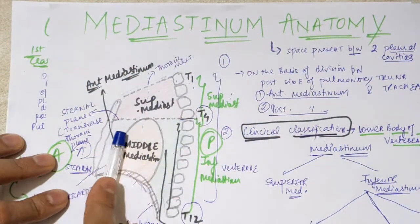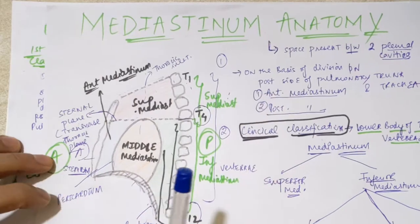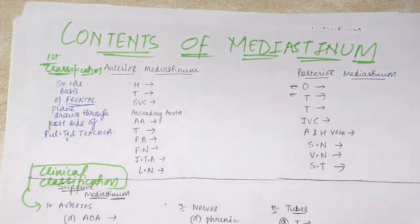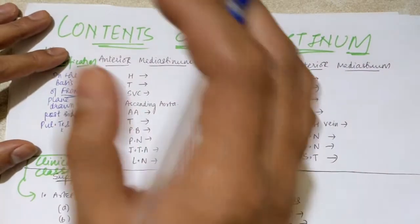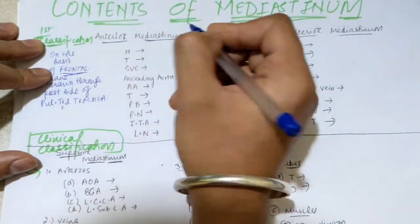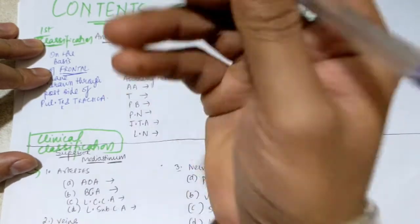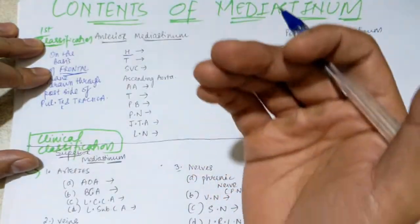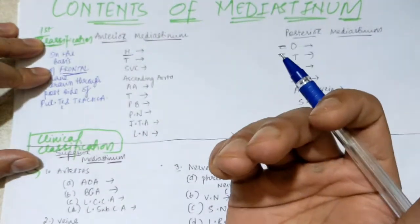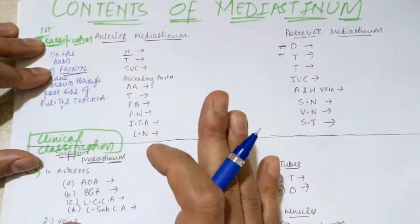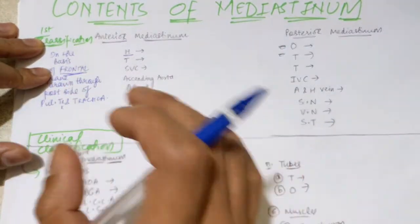In this diagram, you can consider trachea coming from here — this is a lateral view — and here will be your pulmonary trunk. On the posterior side of your trachea and pulmonary trunk, a frontal plane is drawn, which divides the mediastinum: this side will be your anterior mediastinum, and posterior to this plane will be your posterior mediastinum. The next classification — superior, anterior, middle, and inferior mediastinum — is a clinical classification used in radiology when doing a chest X-ray for diagnosis.